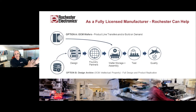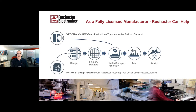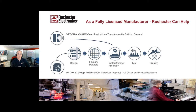Here's how Rochester can help. We have a couple of different options broadly. Option A on this slide is really talking about product line transfers, built on demand. It's a wafer transfer, typically from the original manufacturer, where we've got all the wafer storage in-house, and then we do assembly, test, and qual of the product — starting with the original semiconductor wafer from the original manufacturer, and testing using the original manufacturer's test program.